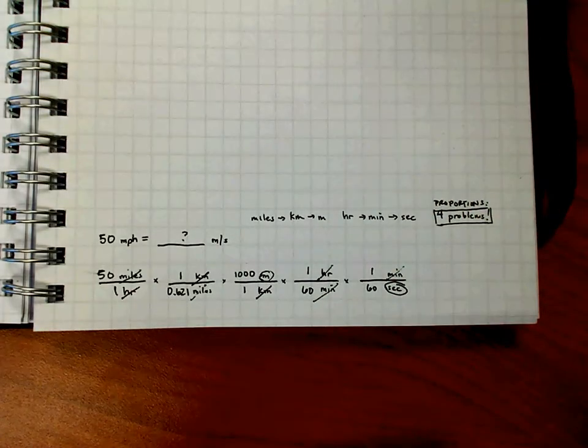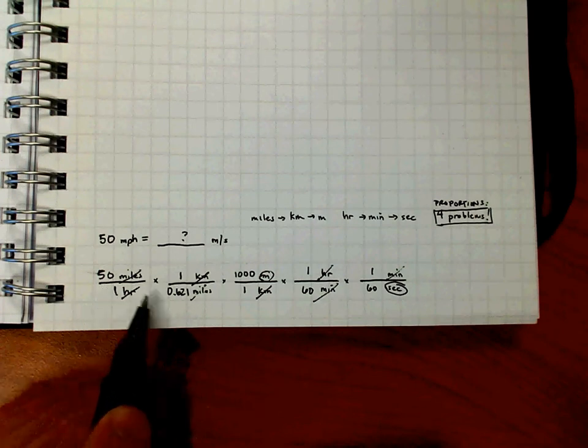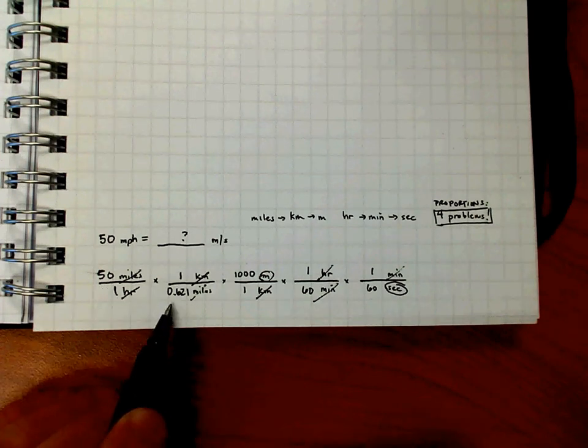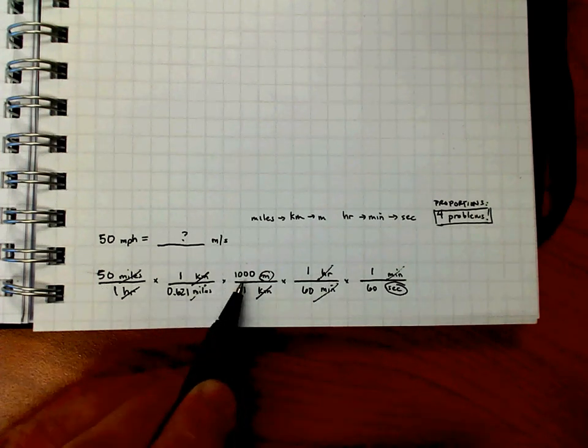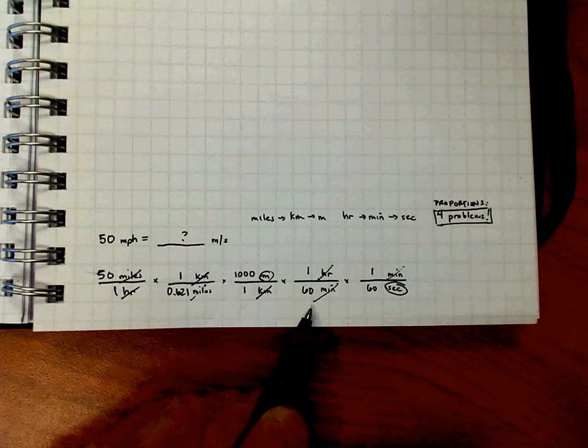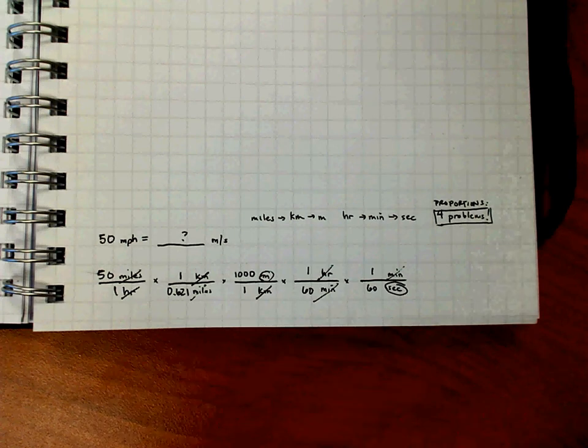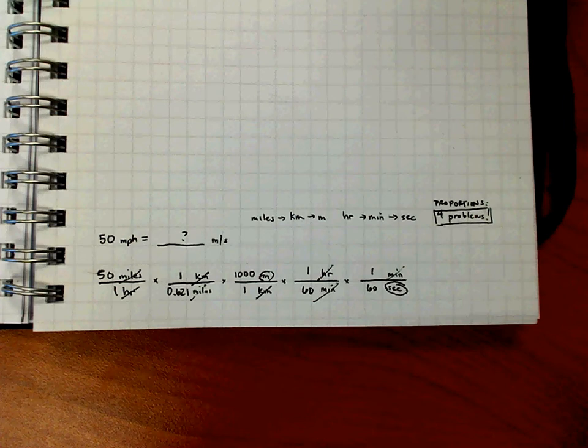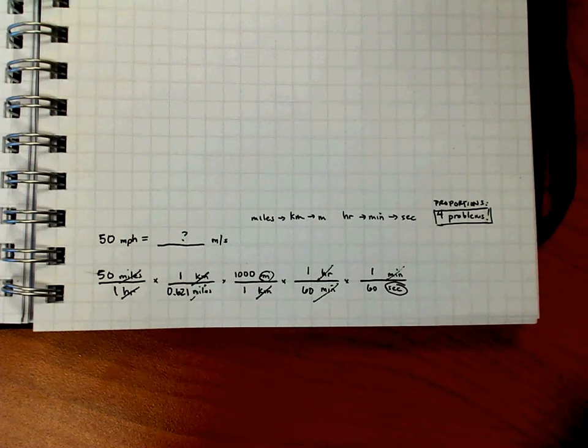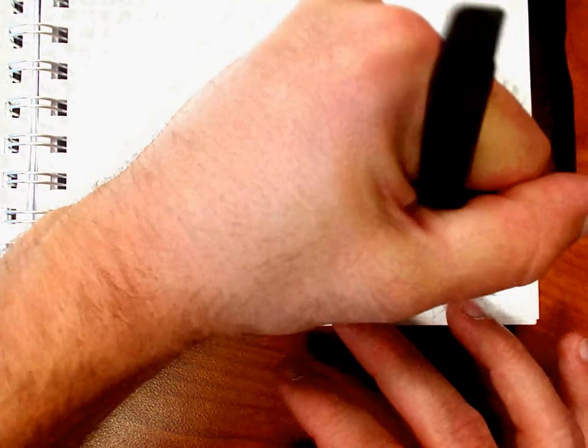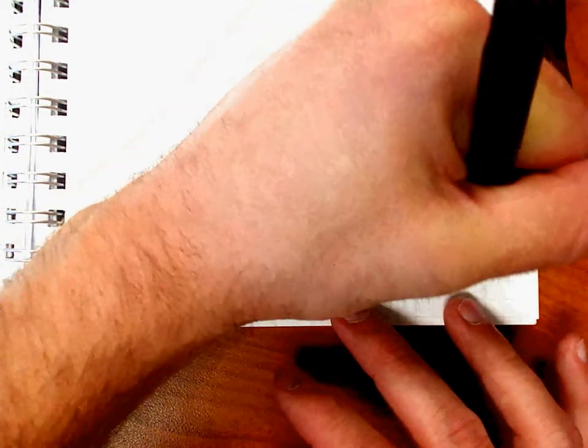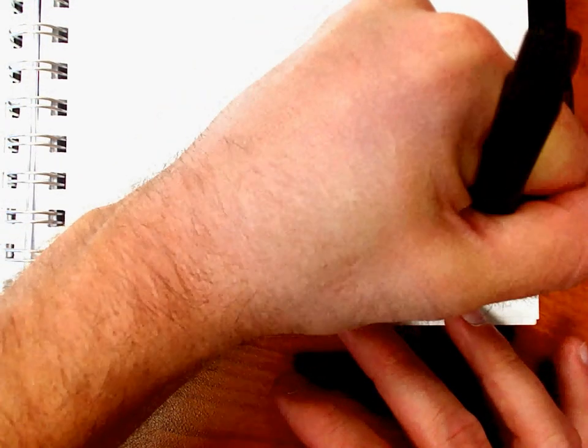So I'm going to take 50. I'm going to divide it by 0.621. I'm going to multiply by 1,000. I'm going to divide by 60. I'm going to divide again by 60. And so in one step, I go straight from the beginning. Let me do that for you. 0.621 times 1,000 divided by 60. I end up with an answer of 22.37 meters for every second that we travel. One step.